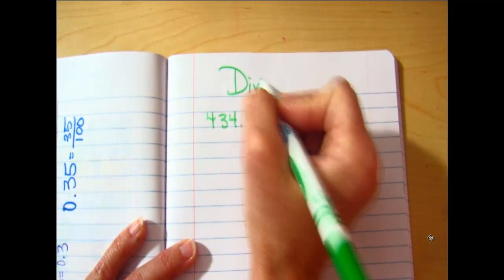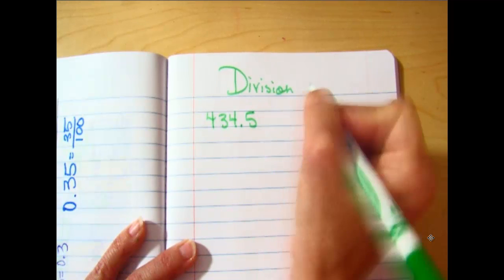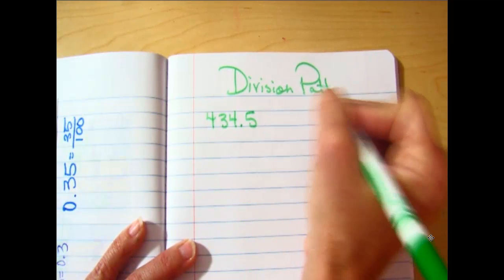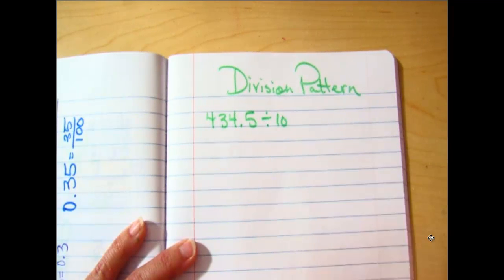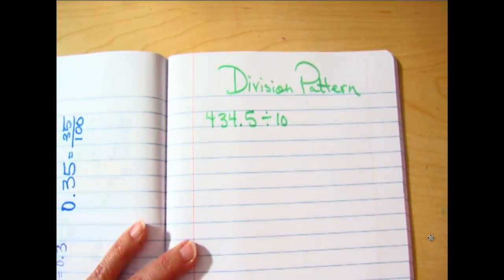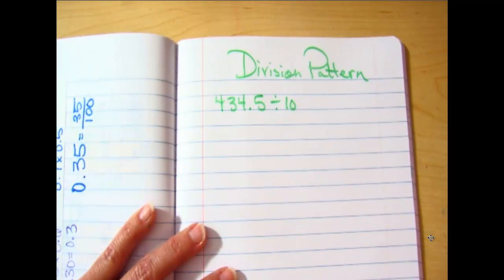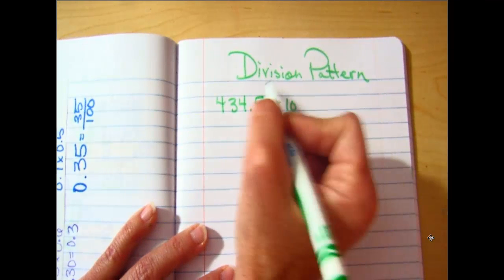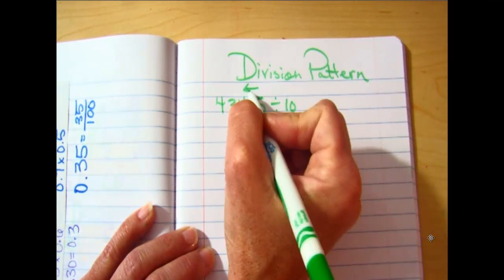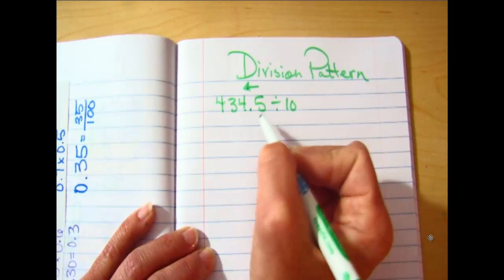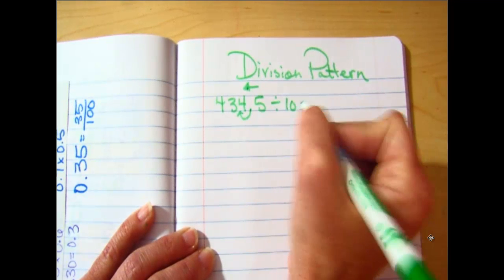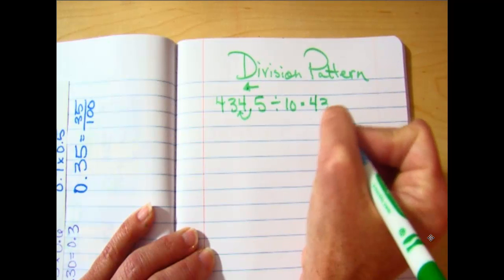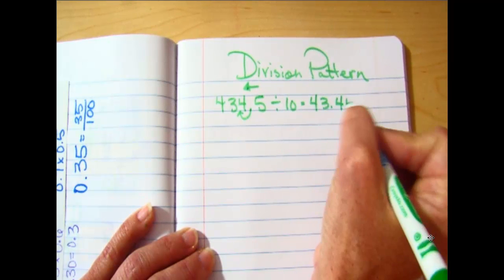My decimal is going to go which way, to the left or the right? Left. Because I'm dividing by 10, my decimal's going to go to the left. How many times? Once. So I'm just going to move it over one time and I have 43.35.